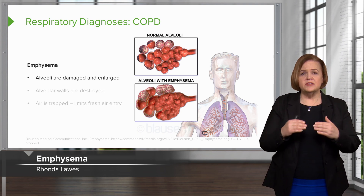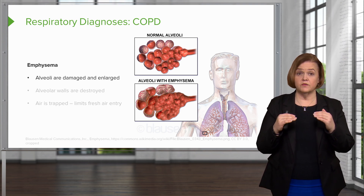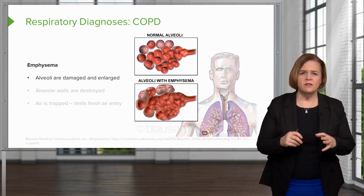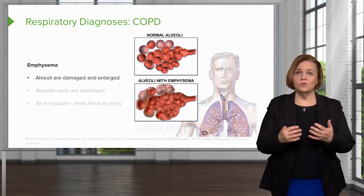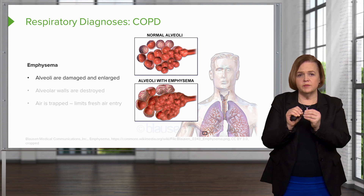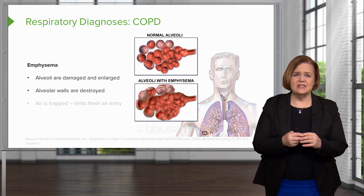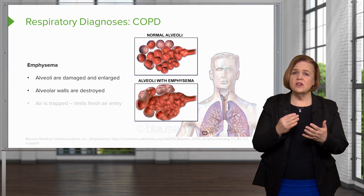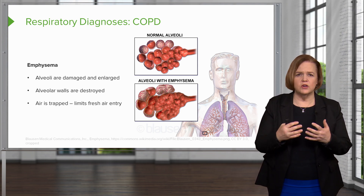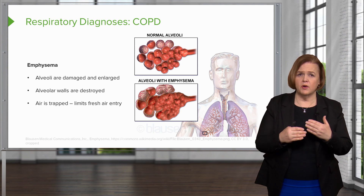Emphysema is a little bit different. Remember, COPD is an umbrella term for these two disease processes — bronchitis, which is inflammation of the airways, and emphysema. In emphysema, the airways are blown up; the alveoli are really damaged and enlarged. Normally we compare alveoli to a cluster of grapes — uniformly shaped, round, open, and inflated. In emphysema, those walls have been damaged and destroyed, so they're not those cute little round shapes anymore. When they're not uniform shapes, they don't exchange CO2 and O2 well, and air gets trapped in there. That's why we end up having major respiratory problems with emphysema.